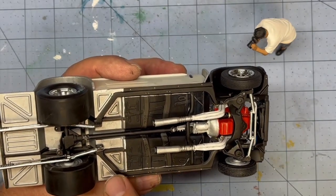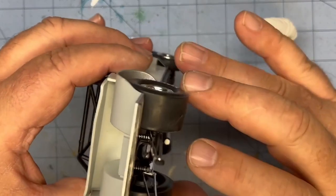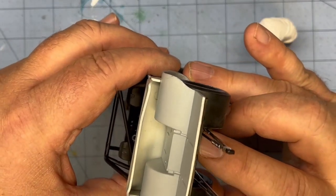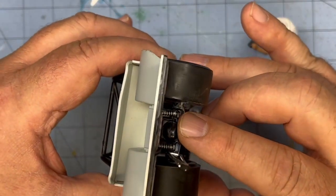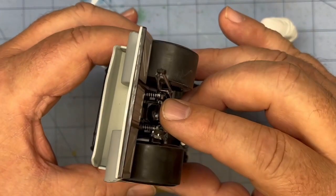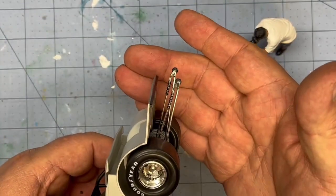The rear end is completely done. I use panel liner on the springs to highlight those. Same with the springs on the wheelie bars.